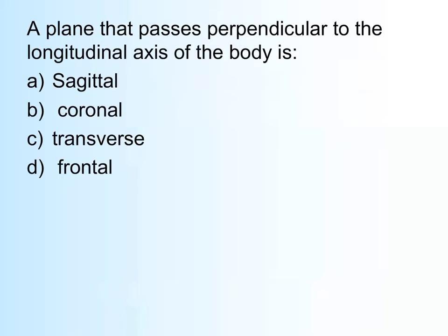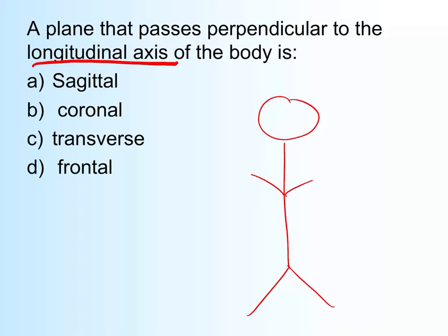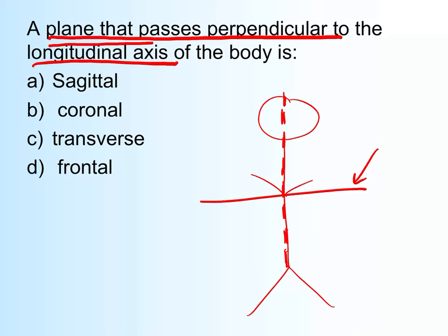What plane passes perpendicular to the longitudinal axis of the body? The longitudinal axis is the long axis running head to toe. A plane perpendicular to that would cut across horizontally — that is the transverse plane.